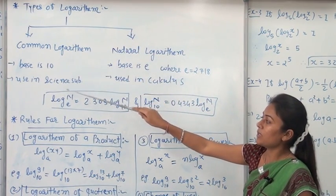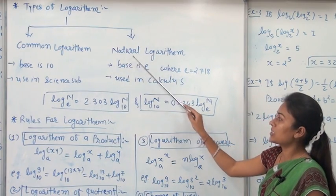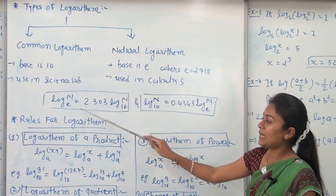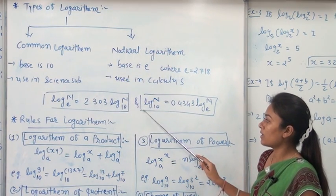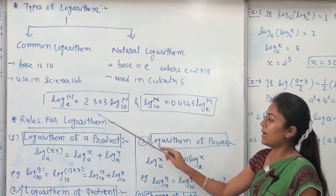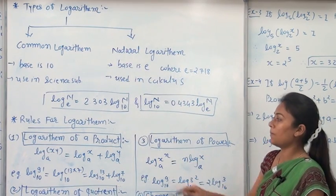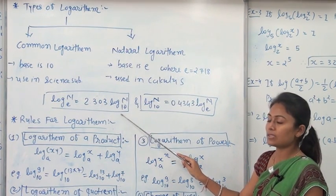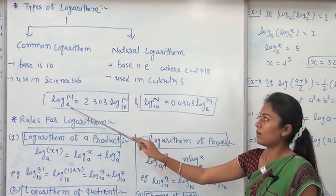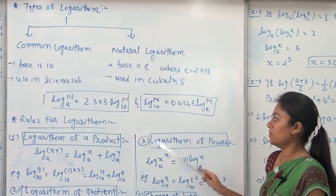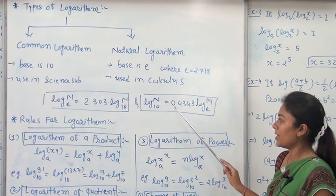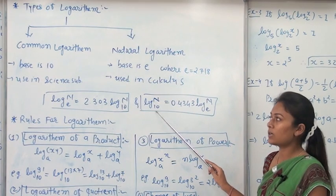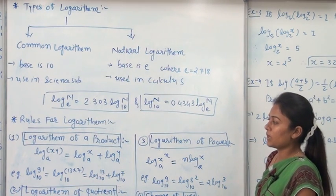Common logarithm is usually used in science subjects and natural logarithm is usually used in calculus. You can convert base 10 into base E and base E into base 10 using two important formulas: log N base E equal to 2.303 times log N base 10, and log N base 10 equal to 0.4343 times log N base E.